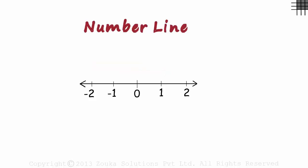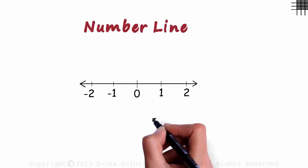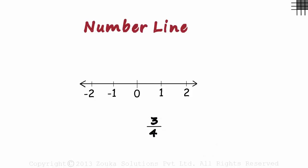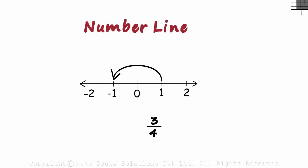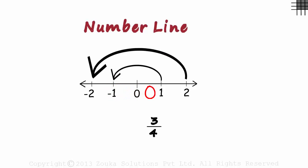It's easy to plot integers, but how do we plot numbers like 3 by 4? Before we understand how to plot this, we need to understand a very crucial point. Every integer except zero has a corresponding integer. The integer 1 has minus 1 as its corresponding integer. The integer 2 has minus 2 as its corresponding integer. Similarly, every negative integer will have a corresponding positive integer.